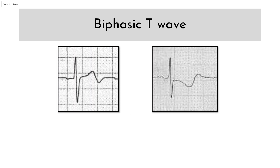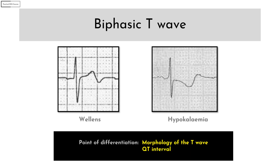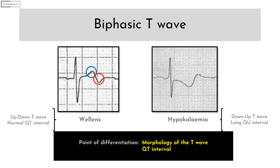The two DDs for biphasic T waves are Wellens syndrome and hypokalemia. The differentiation is based on the morphology of the T wave and the QT interval. If the T wave has an initial positivity with a subsequent negativity, consider Wellens syndrome. If the T wave has an initial negativity with a subsequent positivity, consider hypokalemia. In addition, the QT interval is generally normal in Wellens syndrome whereas it is prolonged in hypokalemia.